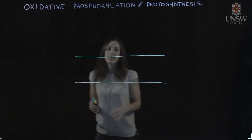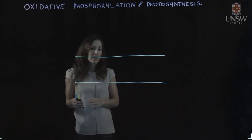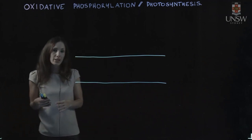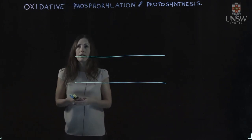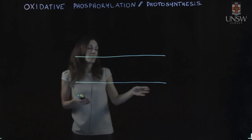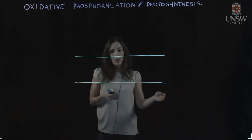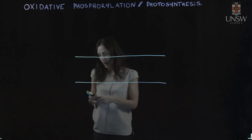What I'm going to cover now is the comparison between oxidative phosphorylation, which occurs in mitochondria, versus photosynthesis, which is carried out in chloroplasts if we're looking at eukaryotic cells.